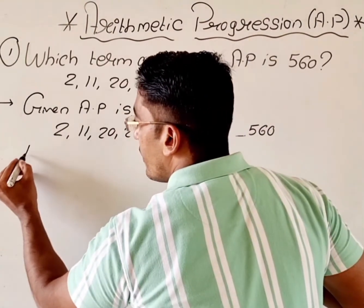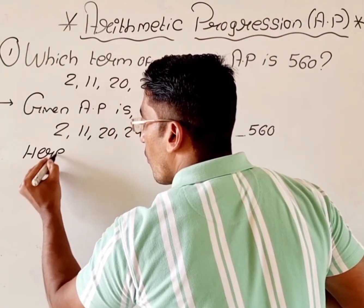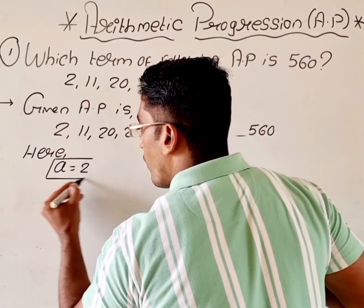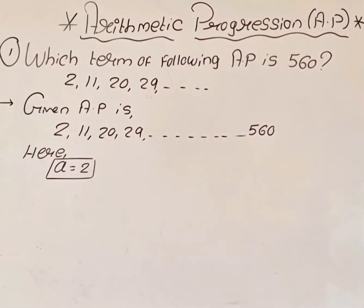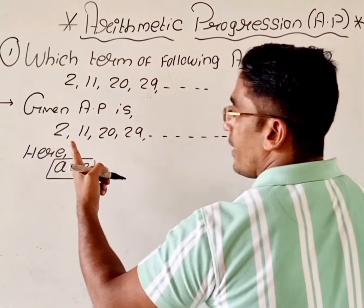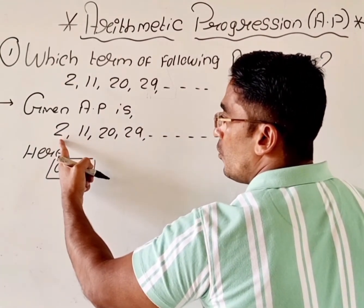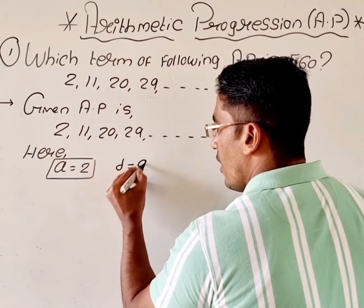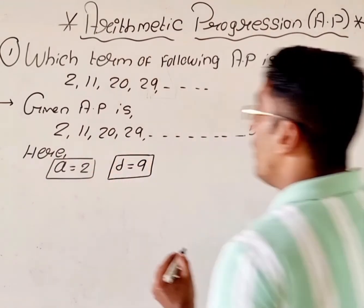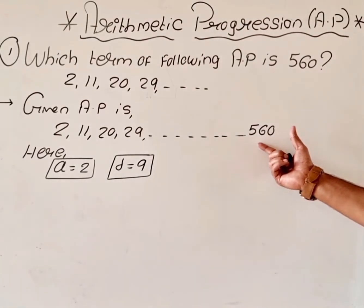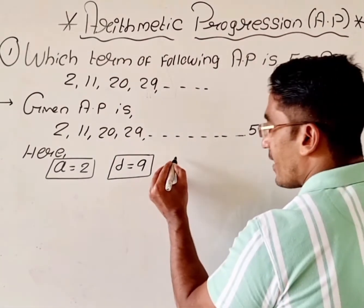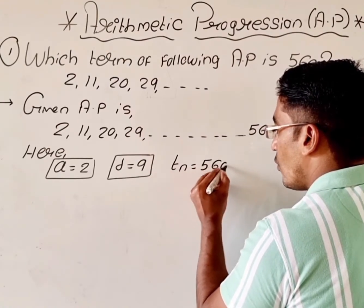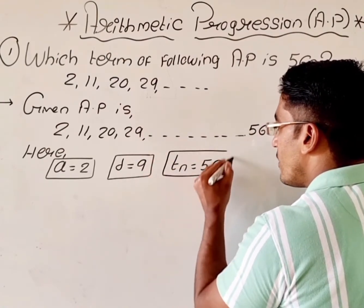Here, A is equal to 2. The first term is always considered as A. For D, we subtract any two consecutive terms: 11 minus 2 is 9, and 20 minus 11 is also 9. So our D is 9. I have the value of A and D. Now in this case the term we are looking for is T(N), so T(N) is equal to 560.